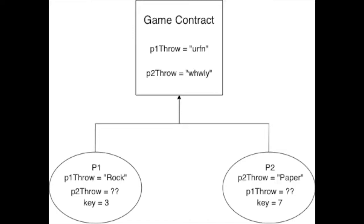In this next step of the commitment scheme, each player is going to encode their throw with the key used in a caesar cipher so that their opponent doesn't know what their answer was based on the encoded version. Player 1 chose rock, so with the key 3 they posted the answer URFN to the game contract. Likewise, player 2 with paper and key 7 posted the encrypted version of their answer, WHWLY.